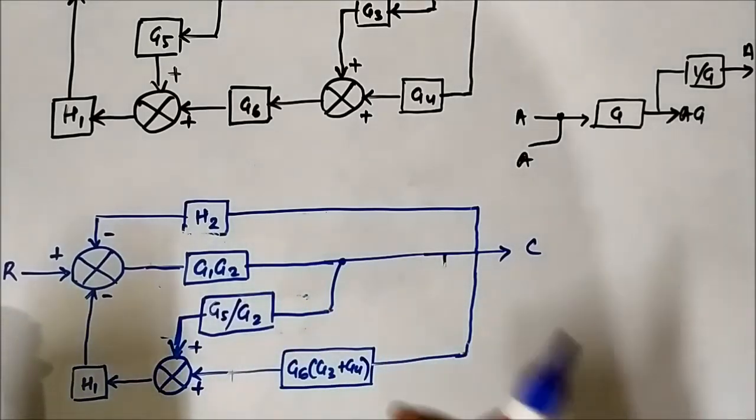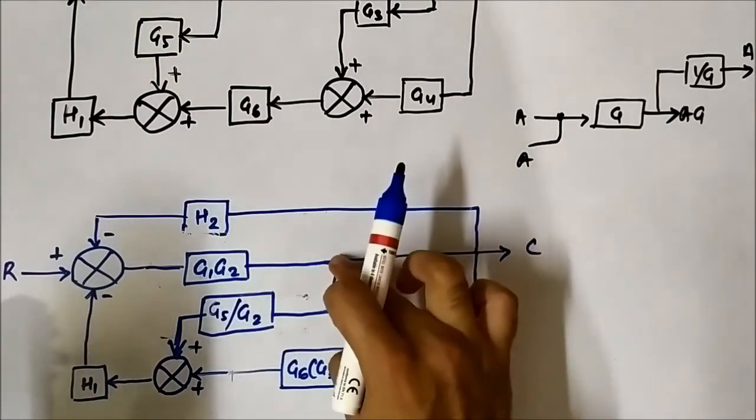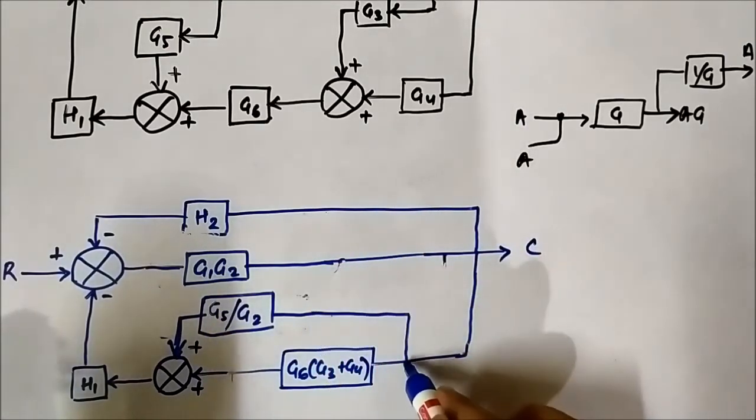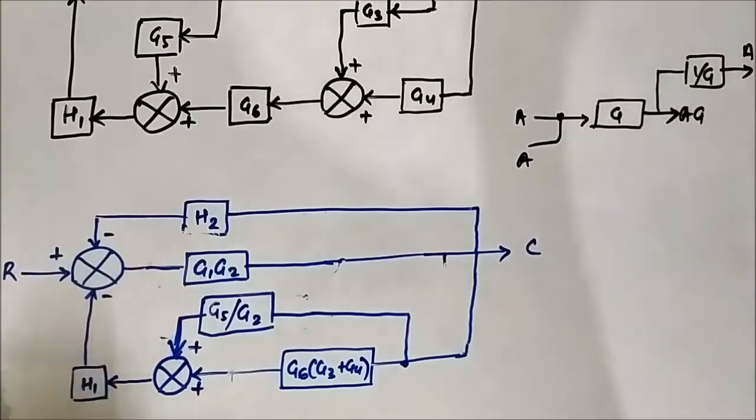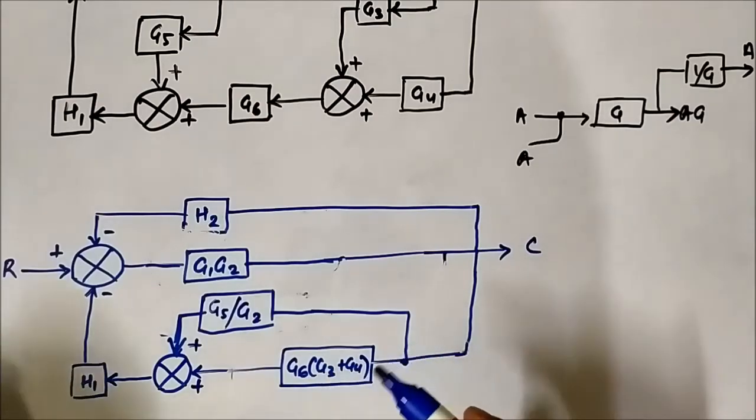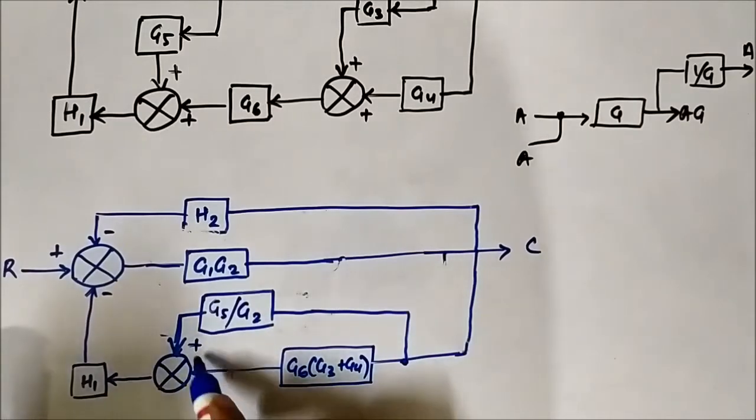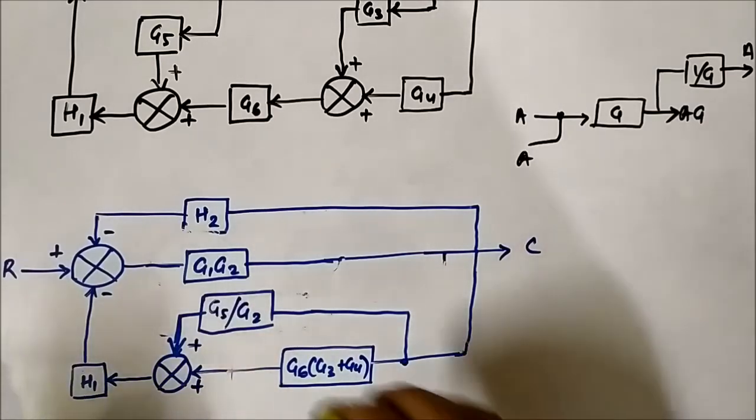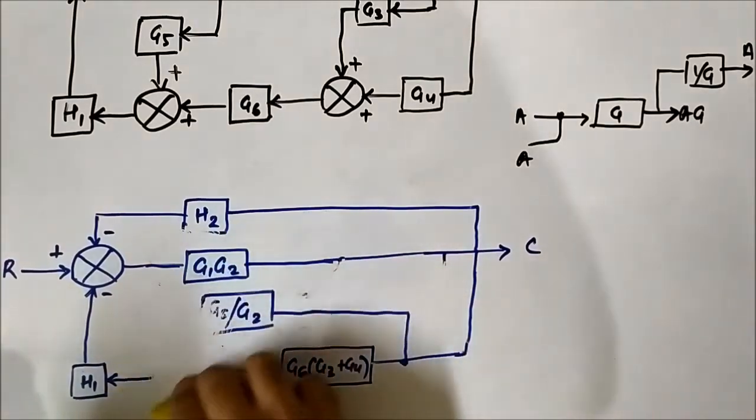Actually, this whole thing connected here means we can think of it like this same thing—it is all connected to this output. Again, G5 by G2 and G6 into G3 plus G4, they are in forward path, plus plus. So they will also get added up: G5 by G2 plus G6 into G3 plus G4. So we will do that.